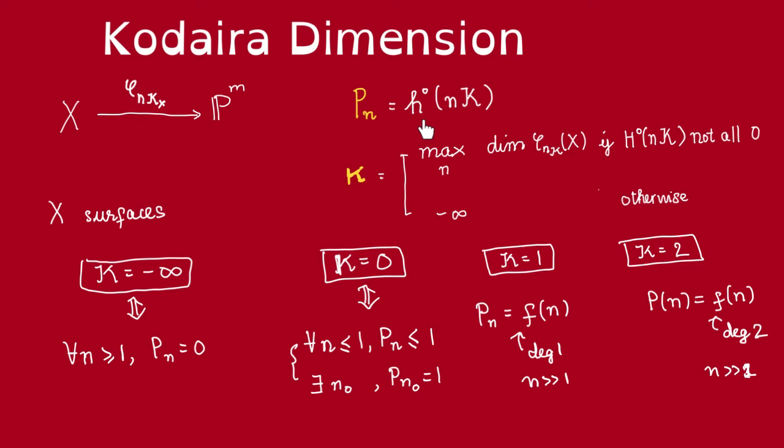Now, if the Kodaira dimension is 0, that means that these images are either empty, so there may be no global section, or the image might be a point, that at least one of these maps should have image being a point. That means for one of these n, the space of global section must have dimension 1. So, that means that all of these Pn is going to be less than or equal to 1, and for at least one of them, Pn0 is going to be equal to 1.